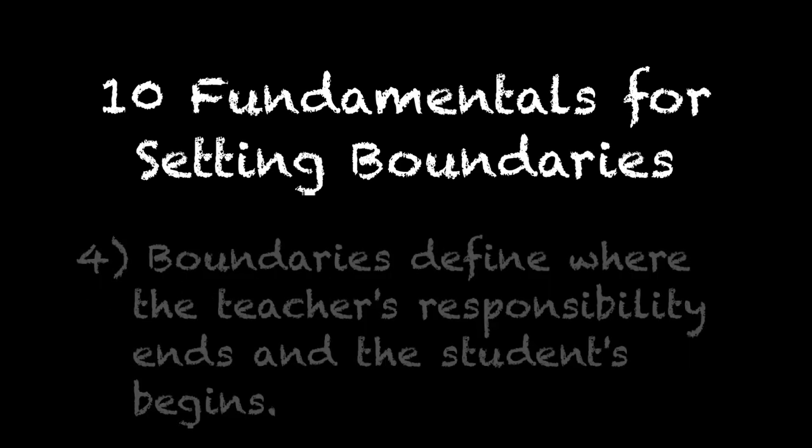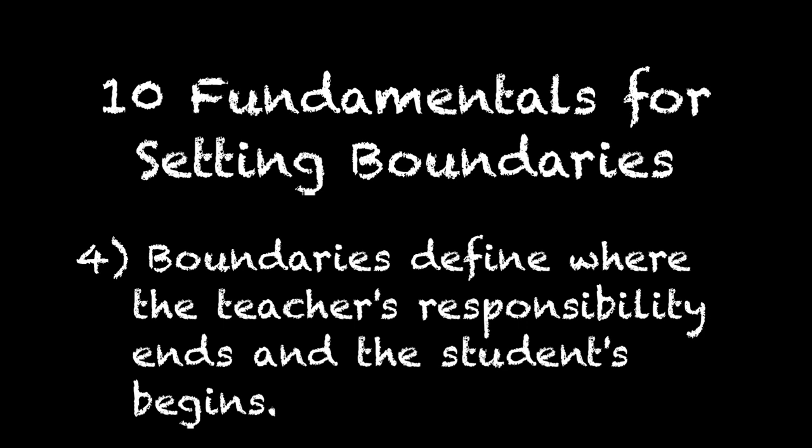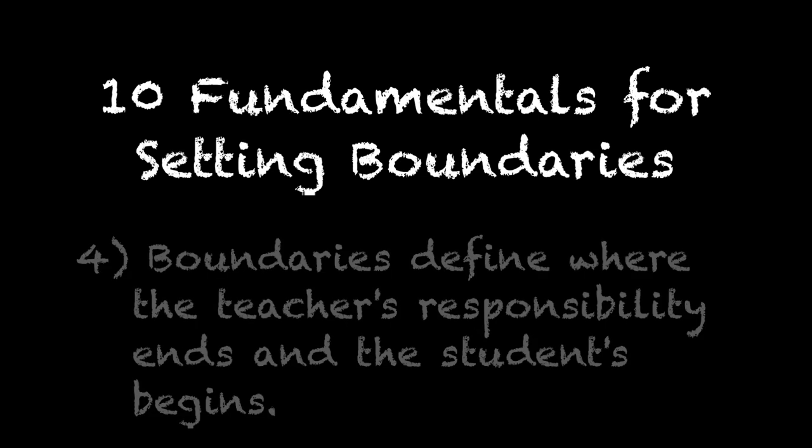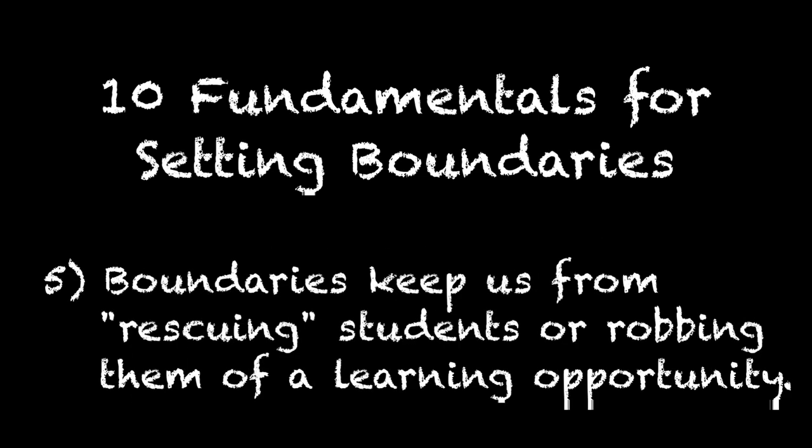Number four: the boundary defines where the adult's responsibility ends and the student's begins — it creates that really clear line. Number five: boundaries keep us from rescuing a child and really put the learning in the natural consequences. It allows those natural consequences to that behavior to do the teaching, as opposed to setting us up to rescue, or even over-punish.